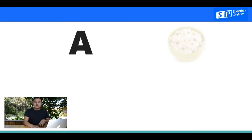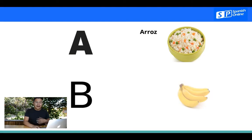The first thing is the A. In English, in Spanish, we say A, for example, arroz. The B, it sounds like bananos.